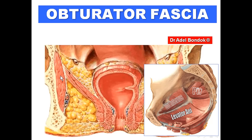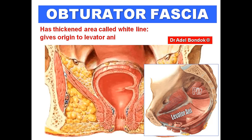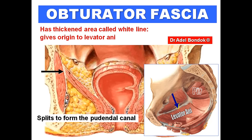The obturator internus is covered by a fascia called the obturator fascia. This obturator fascia is thickened to form the white line, which gives origin to levator ani. The obturator fascia also splits to form the pudendal canal in the lateral wall of the ischiorectal fossa.